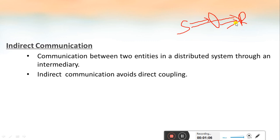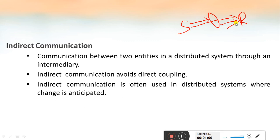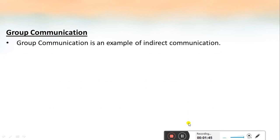Indirect communication means the two entities in a distributed system are communicating through an intermediary — there is no direct coupling between the communicating entities. Indirect communication is often used in distributed systems where a change is anticipated, meaning whenever the system needs to change, update, or replicate any of the participants. Using indirect communication makes it easier because there is no direct connection between the sender and the receiver.